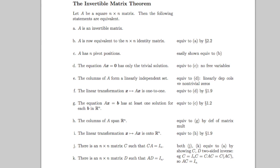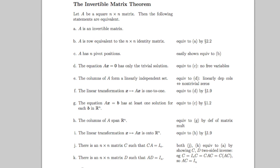The equation AX equals B has at least one solution for every B in R^n. The columns of A span R^n. The linear transformation X to AX is onto R^n. There is an n×n matrix C such that CA equals I_n. There is an n×n matrix D such that AD equals I_n. A transpose is an invertible matrix.